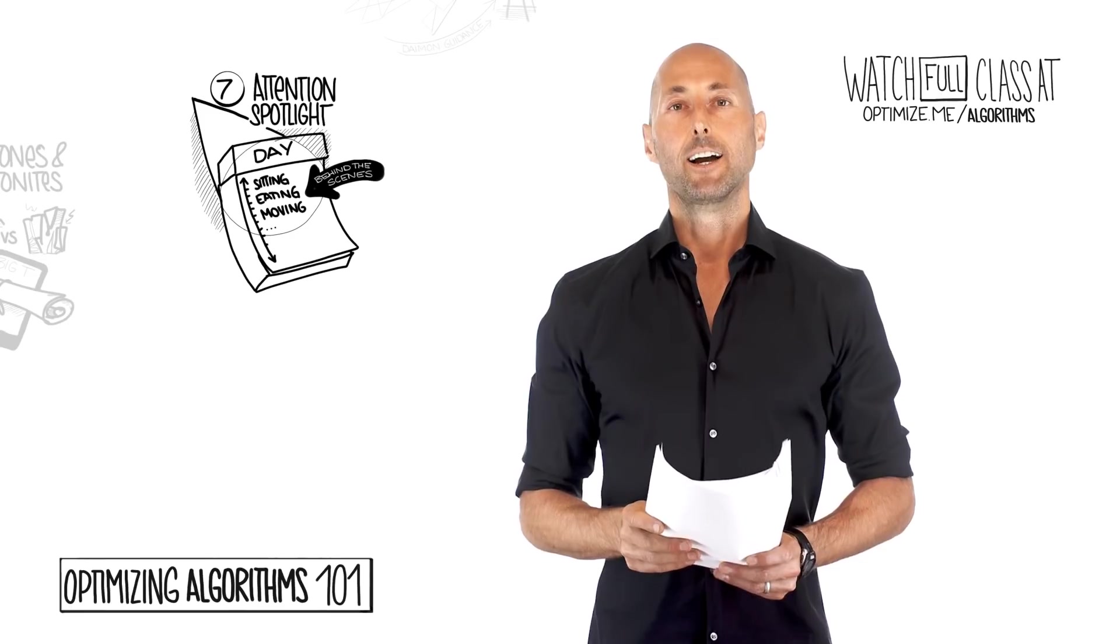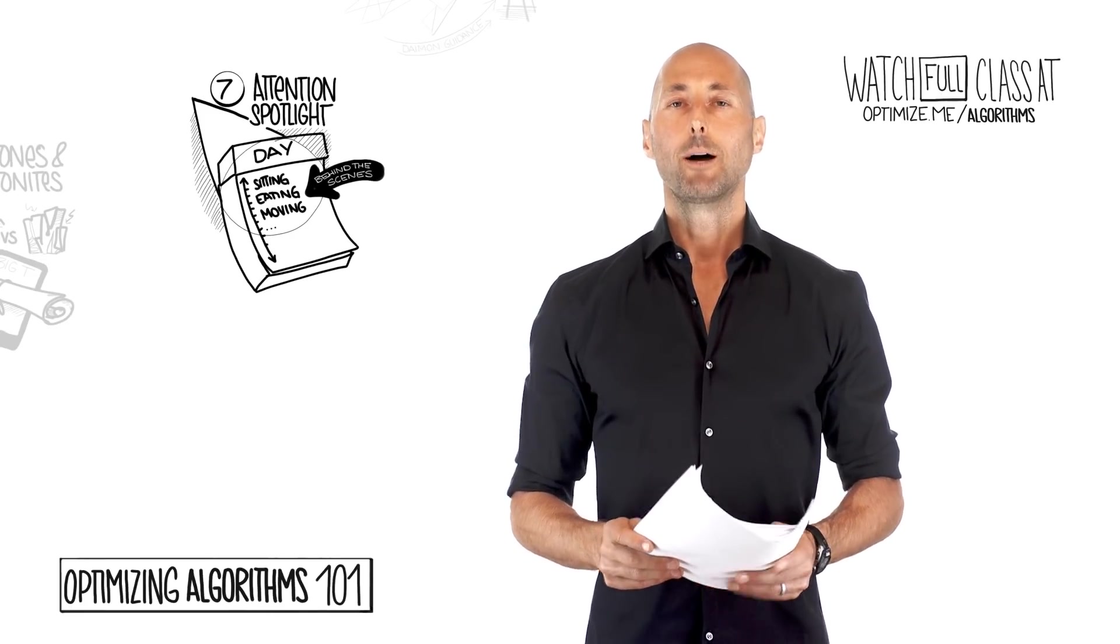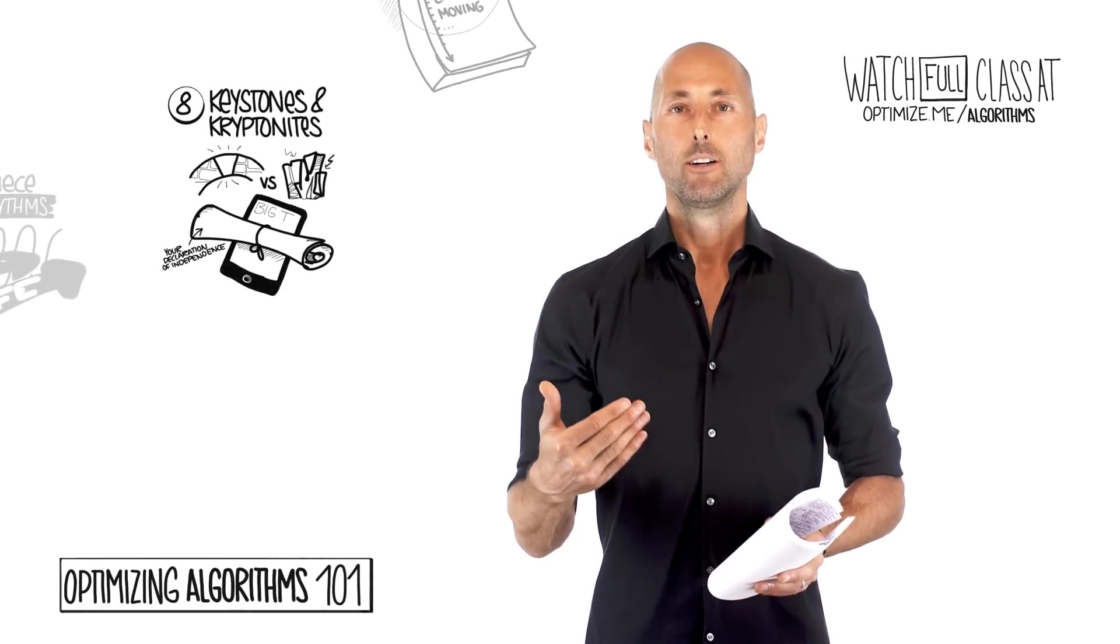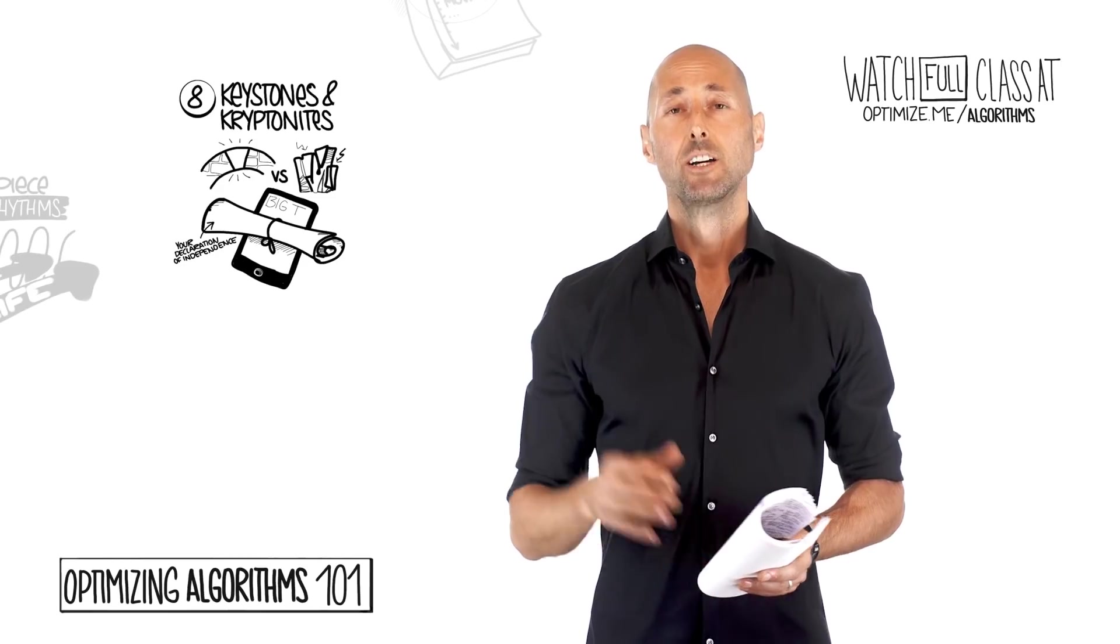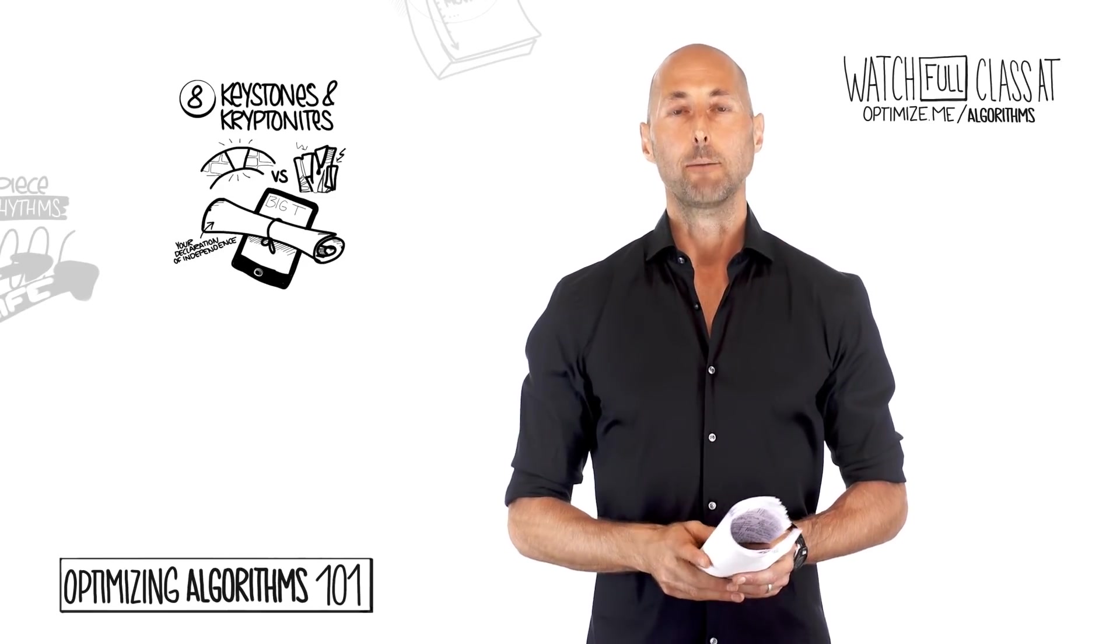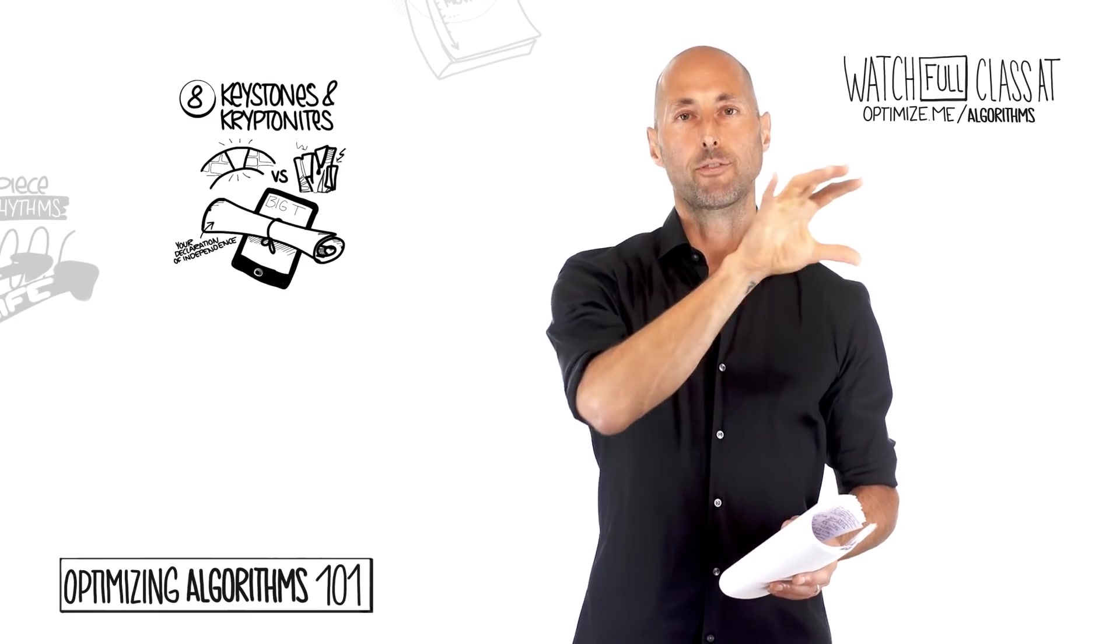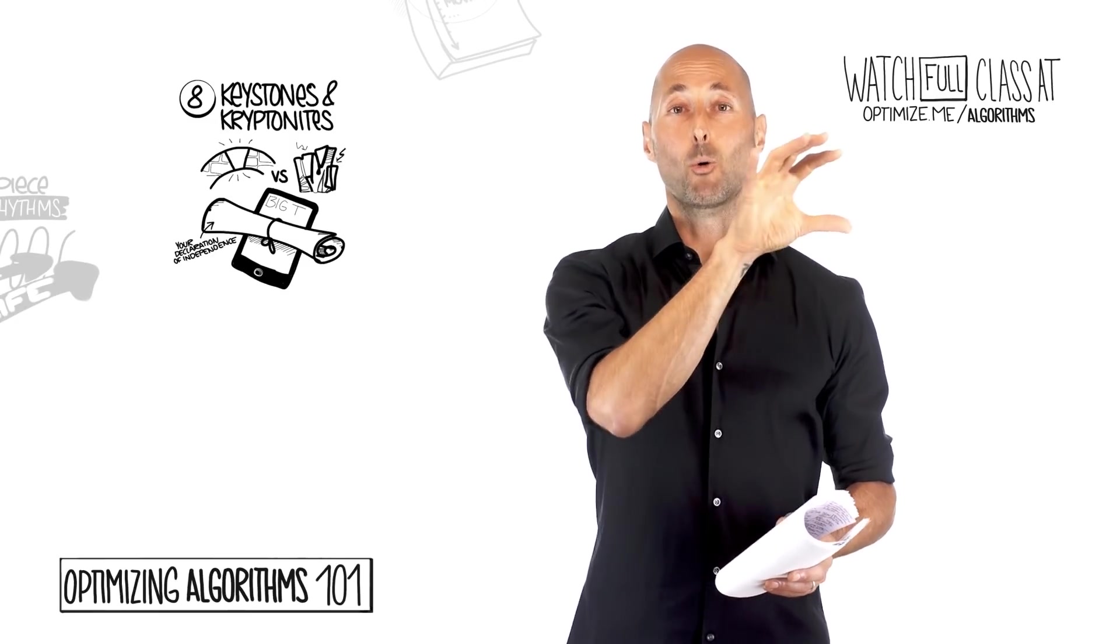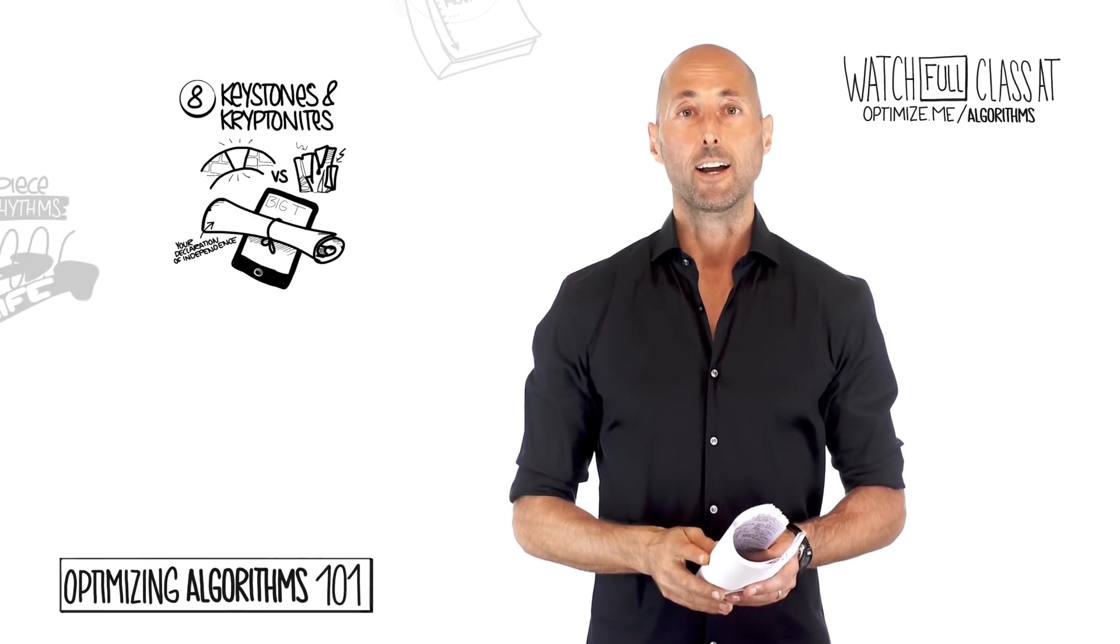The ones that are working, do more of that. The ones that aren't working, needs work, optimize, etc. Our eighth big idea is to drill it down into even more practical detail. We're going to talk about your keystone algorithms. And we're going to talk about your kryptonite algorithms. We're going to drop this into our big three that we talk about all the time.